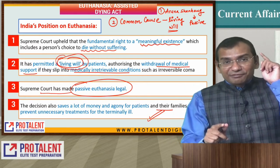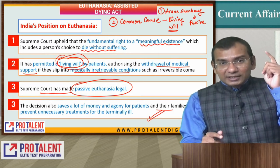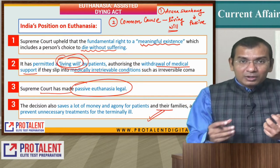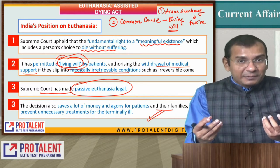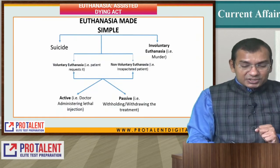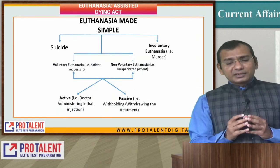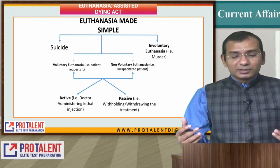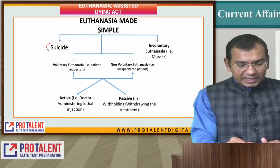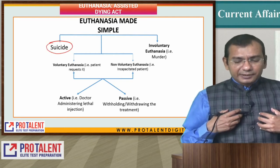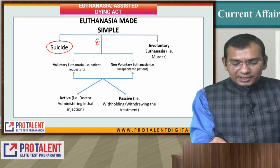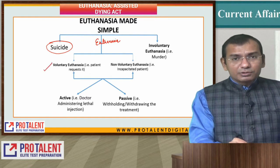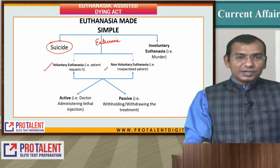We understood the idea of euthanasia from the New Zealand case. Now, what is the difference between euthanasia, suicide, and involuntary euthanasia? Suicide is self-killing. There are different types of euthanasia: we have voluntary euthanasia and non-voluntary euthanasia. There is a difference between non-voluntary and involuntary.